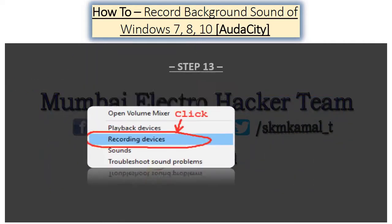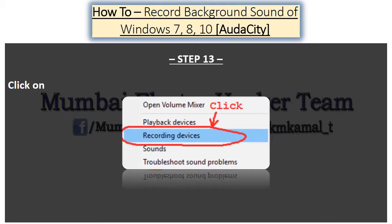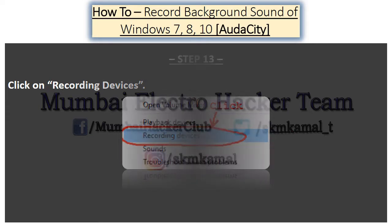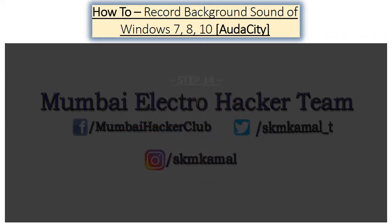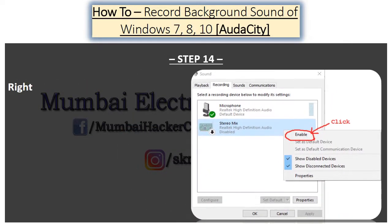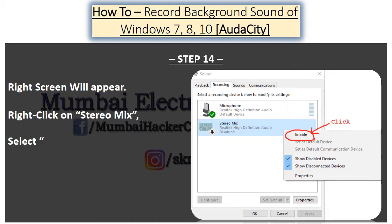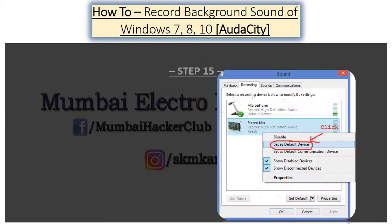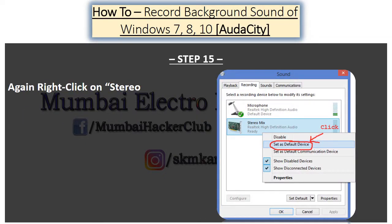Step 13: Click on Recording Devices. Step 14: The right screen will appear. Right-click on Stereo Mix and select Enable. Step 15: Again right-click on Stereo Mix and select Set as Default Device.